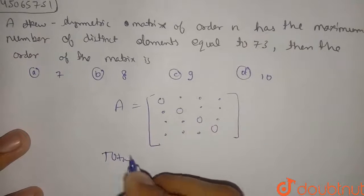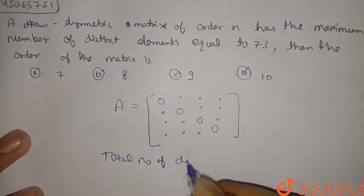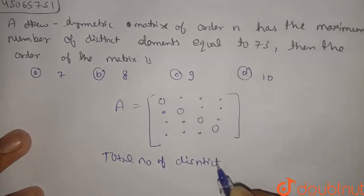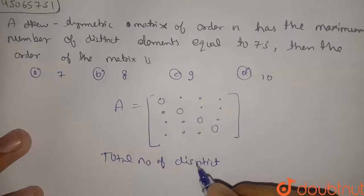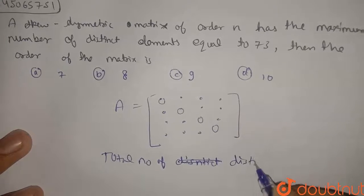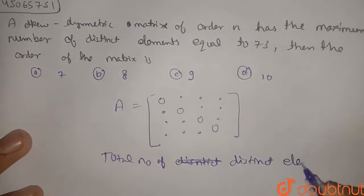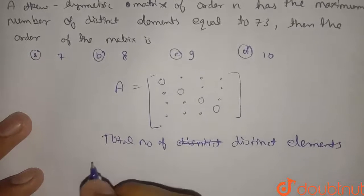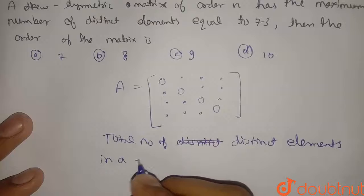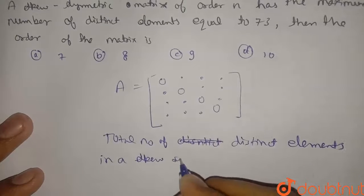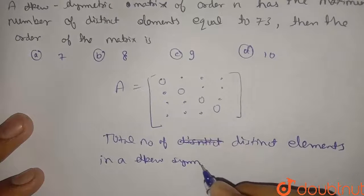Now total number of distinct elements in a skew symmetric matrix of order n: